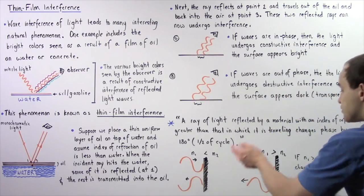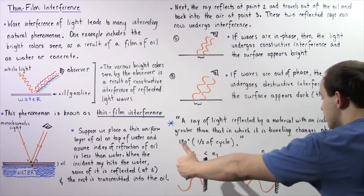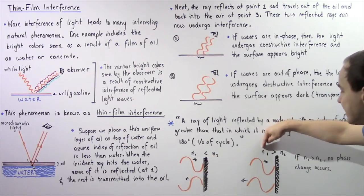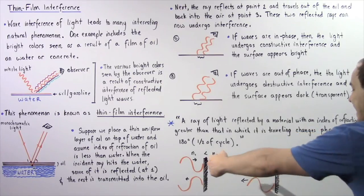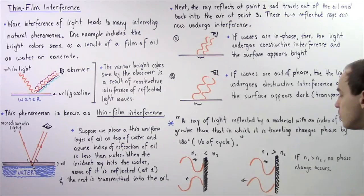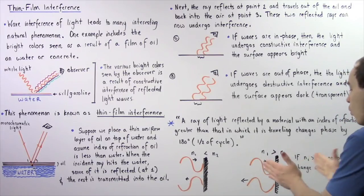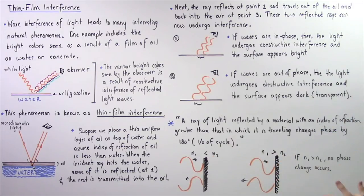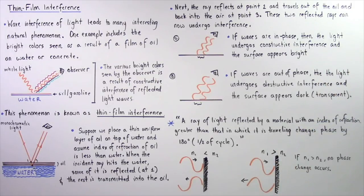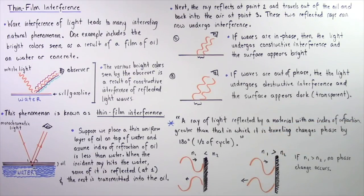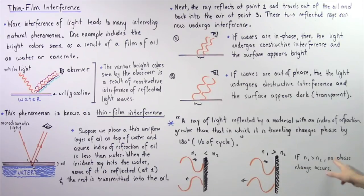On the other hand, if a ray of light propagates through a medium with an index N1 that is greater than N2, it bounces off and no phase change takes place. The wave bounces off in phase with respect to its initial position. If the index of refraction of this medium is greater than the index of refraction of the second medium, no phase change takes place.